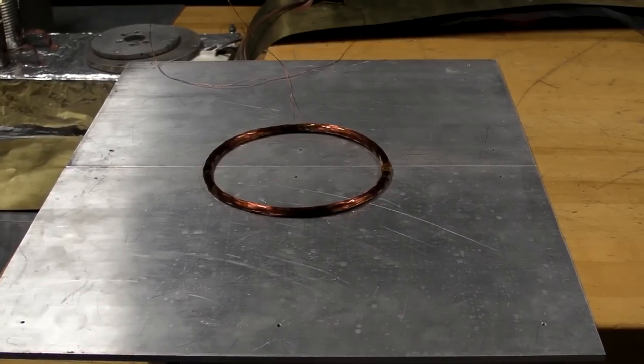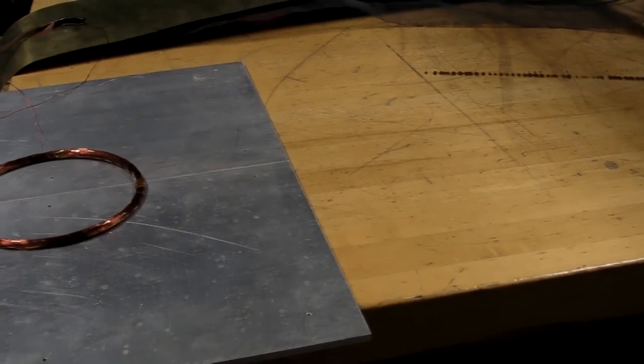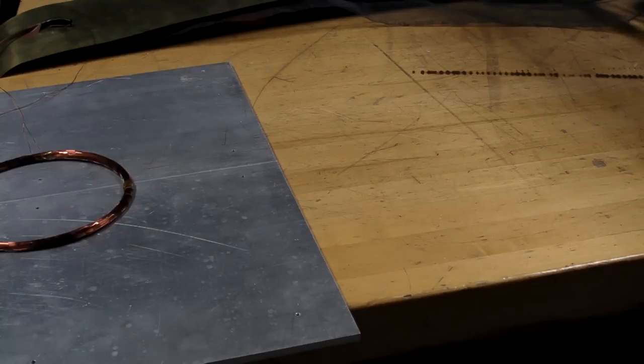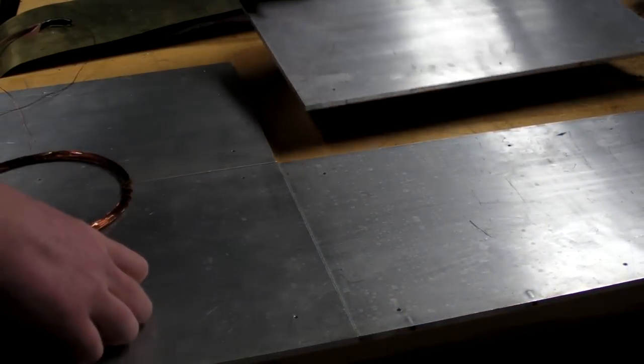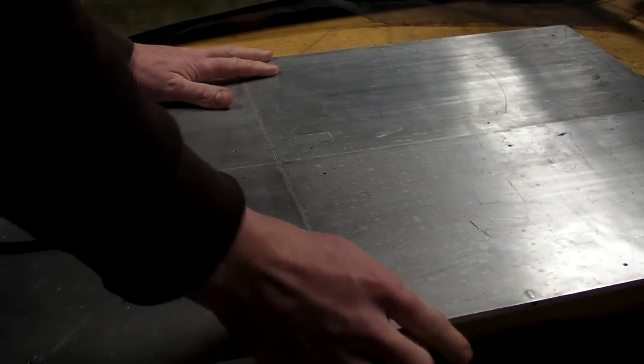And to make it stable in both directions, the next logical step would be to give it four corners to levitate over instead of two edges. So let's try that.